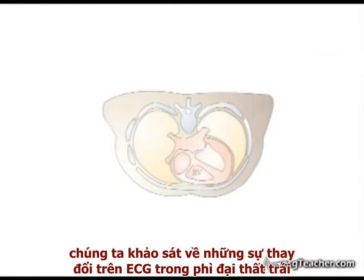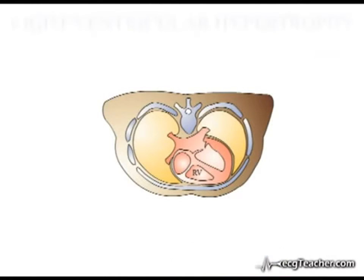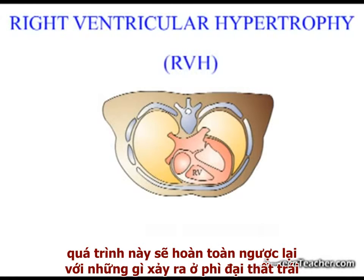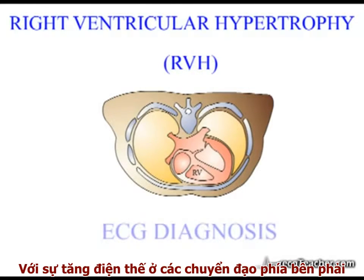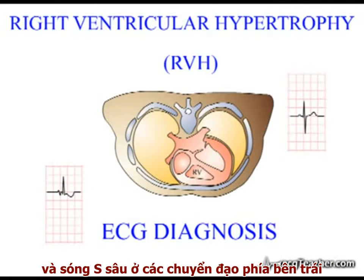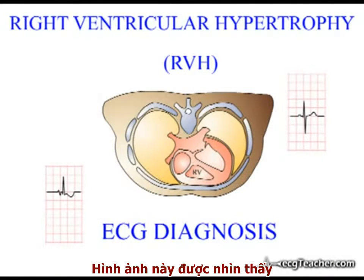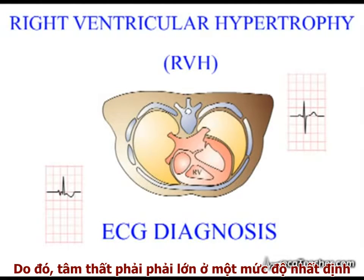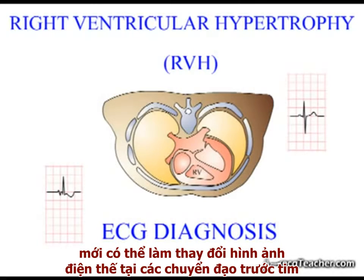In the previous video, we went through the ECG changes associated with LVH in some detail. In right ventricular hypertrophy, we would predict that the opposite process to LVH occurs, with increasing rightward voltages generating abnormally large R waves in the right-sided chest leads and deep S waves in those on the left. While this pattern is seen, because of the dominance of the left ventricle in the formation of the QRS complex, the right ventricle has to enlarge to a very substantial degree to significantly alter QRS voltages in the chest leads.